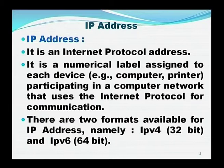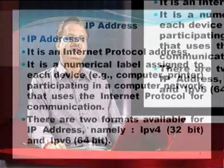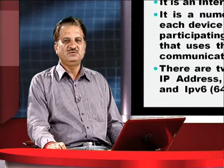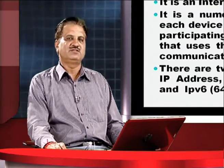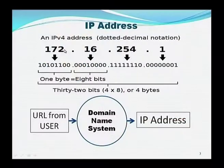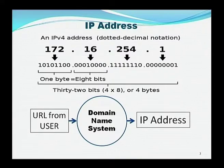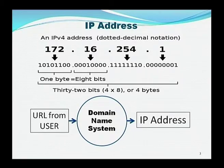The second format is IPv6, which is 64-bit; we least use it, but it has recently been launched and is being used successfully. Here is an example of the IPv4 format: it contains a total of 32 bits, divided into 4 segments, each segment of 8 bits. Each 8-bit segment can have a numeric value from 0 to 255, meaning a total of 256 different values.